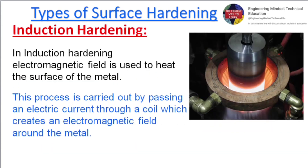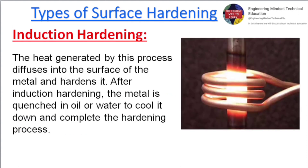Induction hardening: an electromagnetic field is used to heat the surface of the metal. This process is carried out by passing an electric current through a coil, which creates an electromagnetic field around the metal. The heat generated diffuses into the surface of the metal and hardens it. After induction hardening, the metal is quenched in oil or water to cool it down and complete the hardening process.